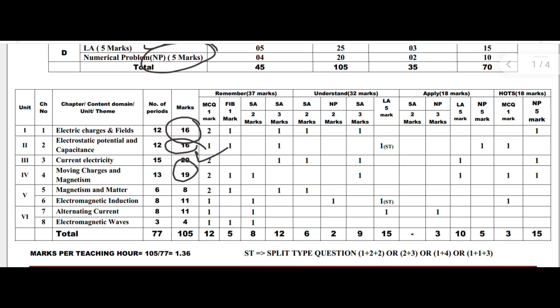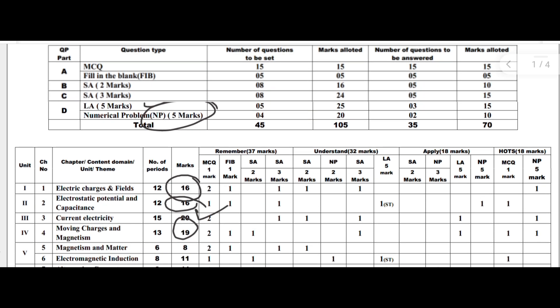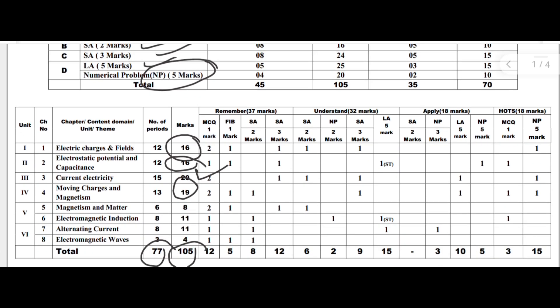The total approximate marks is 105 and the number of allotted teaching hours is 77. This is the first model question paper, where different sections are there: MCQ, FIB, SA type, and NP questions.